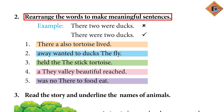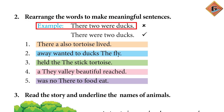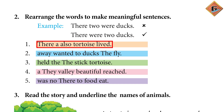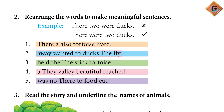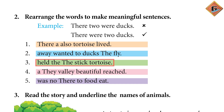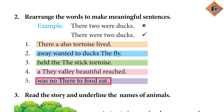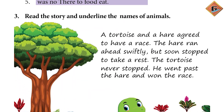Then rearrange the words to make meaningful sentences. Example hai: There two were ducks — agar ham isko arrange karate hain, to: There were two ducks. Page number 55 pe: A tortoise also lived there. The ducks wanted to fly away. Third number pe correction hogi: The tortoise held the stick. Fourth number: They reached a beautiful valley. Fifth number: There was no food to eat.